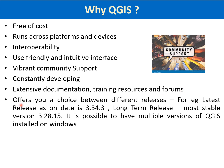QGIS offers a choice between different releases. For example, the latest release available for download is 3.34.3, and the most stable version, known as the long term release, is 3.28.15. It is possible to have both of these versions on the same system — desktop or laptop — and it is possible to have multiple versions of QGIS installed on Windows.